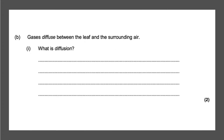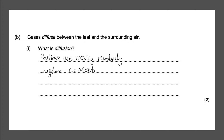Next question: gases diffuse between the leaf and the surrounding air — what is diffusion? This is a simple two-marker and you need some key points. Diffusion is when particles are moving randomly from an area of higher concentration to lower concentration. You can also say it is a net movement, and that will make sure you get your two marks.